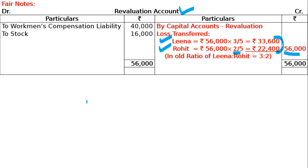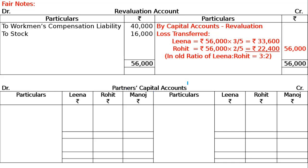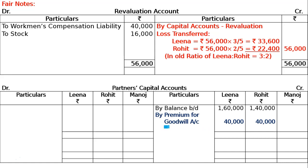Now comes the partners' capital accounts. On the debit side, record revaluation loss. Opening balance is the balance sheet figure. Then, Manoj brought his share of goodwill premium of 80,000 in cash. Since the sacrificing ratio is 1:1, this 80,000 is distributed equally. Journal entry: Cash debited; premium for goodwill account debited 80,000; to Lena's capital account 40,000; to Rohit's capital account 40,000.